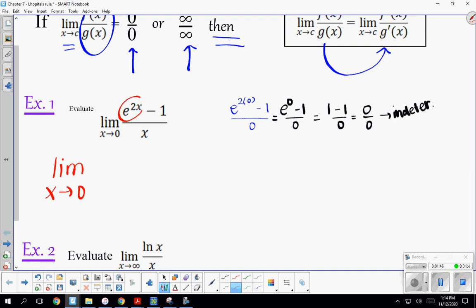When we take the derivative of e^(2x), we get e^(2x) times the derivative of whatever that inside function was, so we're going to have a 2. The derivative of -1 is 0, and that's all over 1 because the derivative of x is 1.